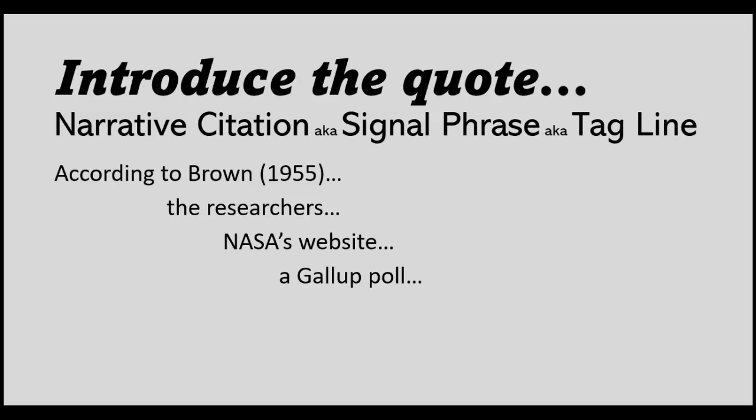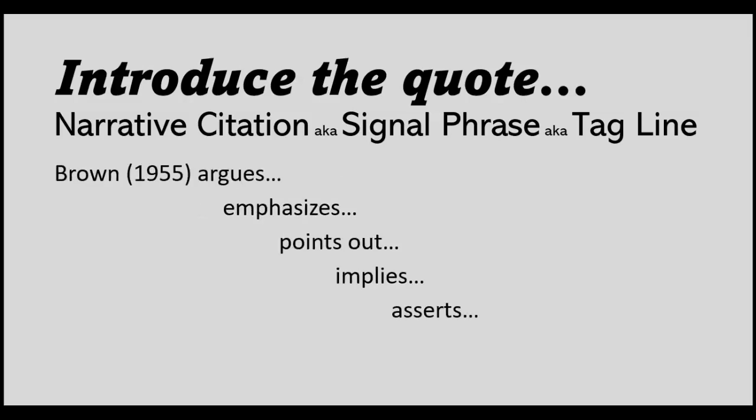To introduce the quote, you use something called a narrative citation — also sometimes called a signal phrase or a tagline. You use the author's last name, such as Brown, or a phrase like 'the researchers' or 'NASA's website' — whoever is doing the talking. There are many verbs that work well for narrative citations; if you Google 'narrative citation verb ideas' you'll get many more. Notice how other academic writers introduce quotes and take inspiration from the phrases they use.